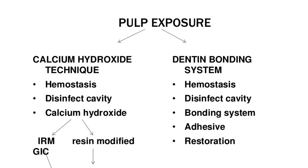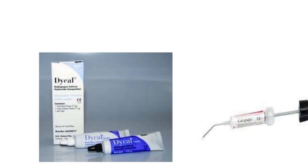Calcium hydroxide technique: Hemostasis, disinfect cavity, apply calcium hydroxide, IRM resin-modified GIC dentin bonding system, then restoration. Dentin bonding system technique: Hemostasis, disinfect cavity, apply bonding system, adhesive, then restoration at pulp exposure site.